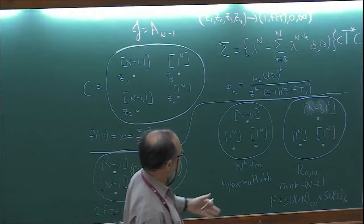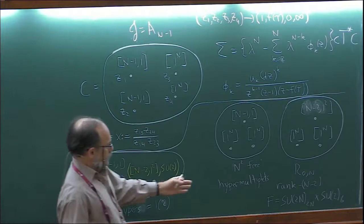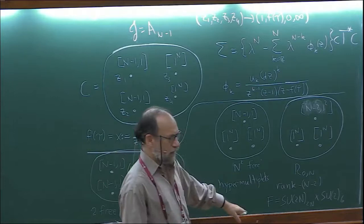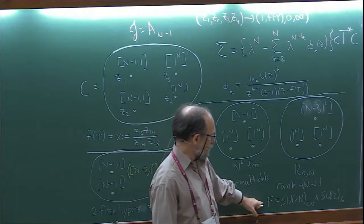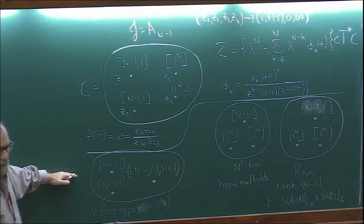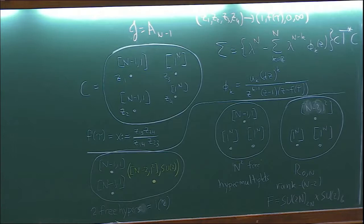But an alternative realization appears when you look at f of tau approaching one. Instead you get an SU(2) gauge theory coupled to a mysterious isolated N equals 2 superconformal field theory whose global symmetry contains an SU(2) factor that you can gauge. In addition to that, there's one of these irregular fixtures which contains an additional hypermultiplet in the fundamental of SU(2), and that combination is conformally invariant. That's the interpretation of this theory at this strong coupling limit: instead of an SU(N) becoming weakly coupled, it's an SU(2) that becomes weakly coupled.